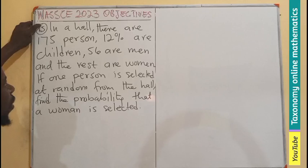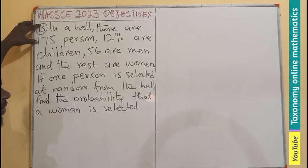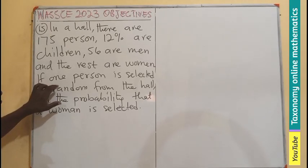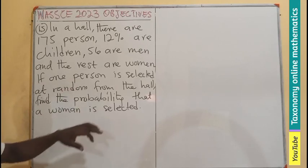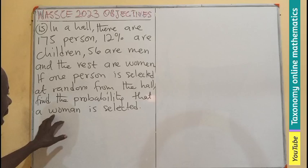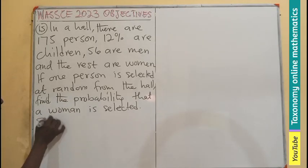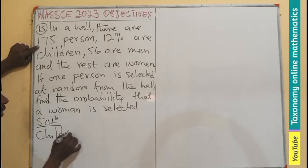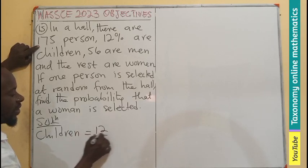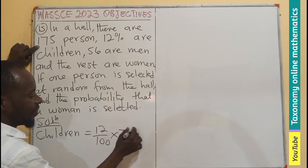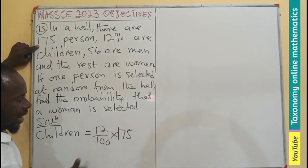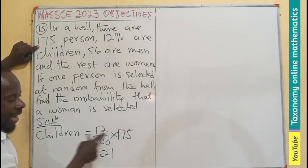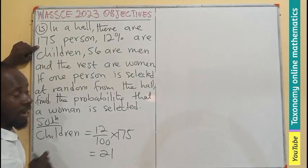Question 15. In a hall, there are 175 persons. 12% are children, 56 are men, and the rest are women. If one person is selected at random from the hall, find the probability that a woman will be selected. First, the total number of people is 175. The number of children is 12%, which is 12/100 times 175. After cancellation, this is 21. That of the men is 56.